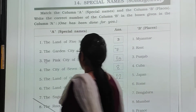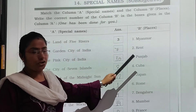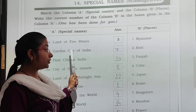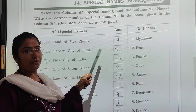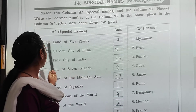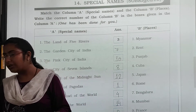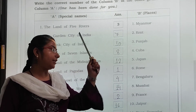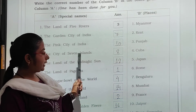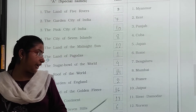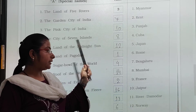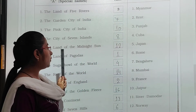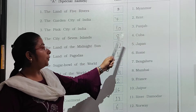Land of five rivers — we call it Punjab. Punjab is also known as the land of five rivers, so three is already written. The garden city of India is Bangalore — write number seven. The pink city of India is Jaipur — write number ten. The city of seven islands is Mumbai — write number eight. The land of midnight sun is Norway — write number twelve. The land of pagodas is Myanmar — write number one. The sugar bowl of the world is Cuba — write number four.